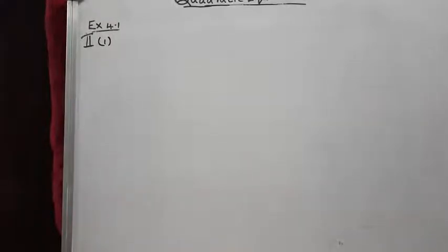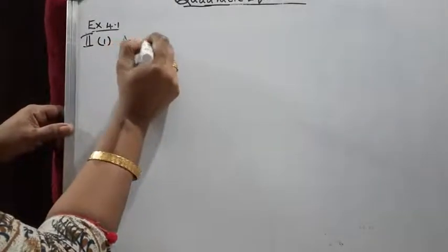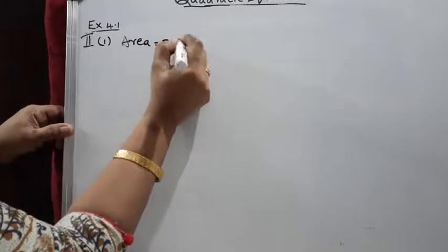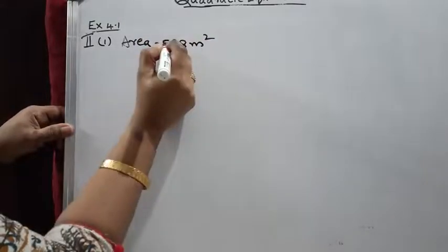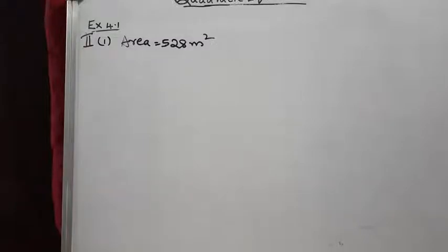First question: the area of a rectangular plot is 528 square meters. The length of the plot in meters is one more than twice its breadth. We need to find the length and breadth of the plot. We have to represent this situation in quadratic form.